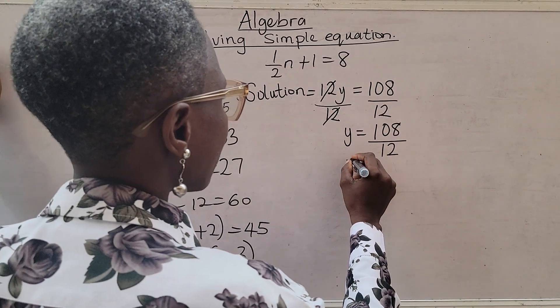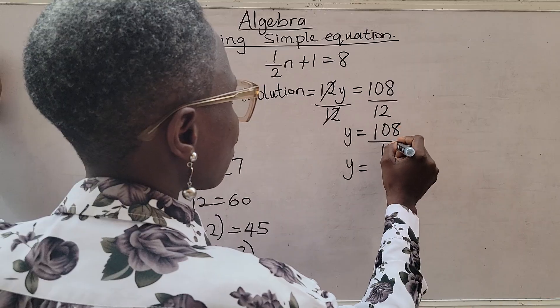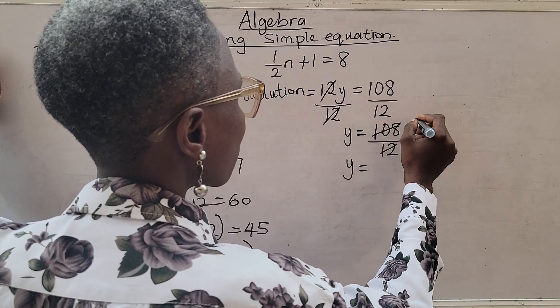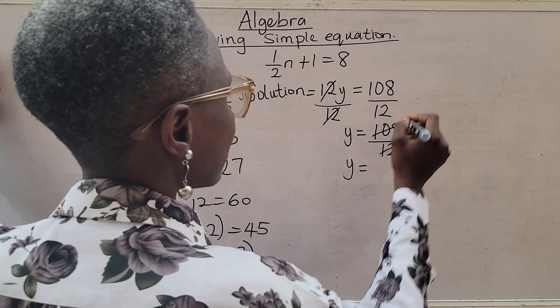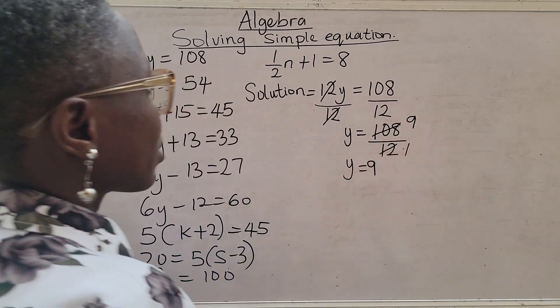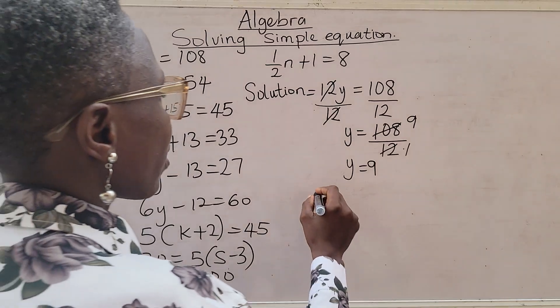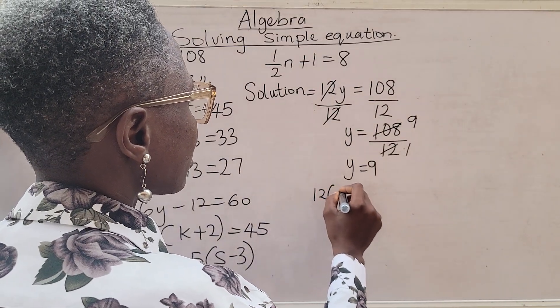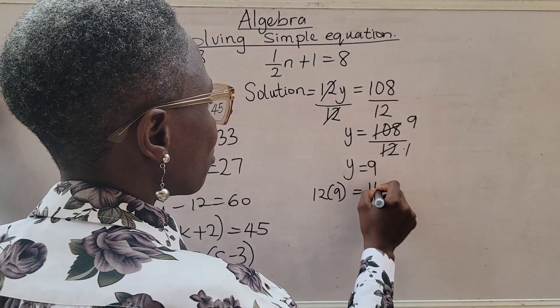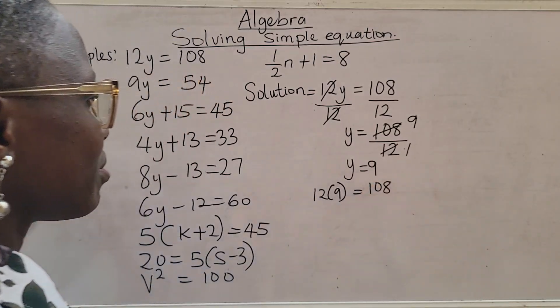If you know your multiplication table, y is going to be 12 here, 1, 12 here, 9. So my answer is simply 9. You can always check. 12 times 9 will give you 108.